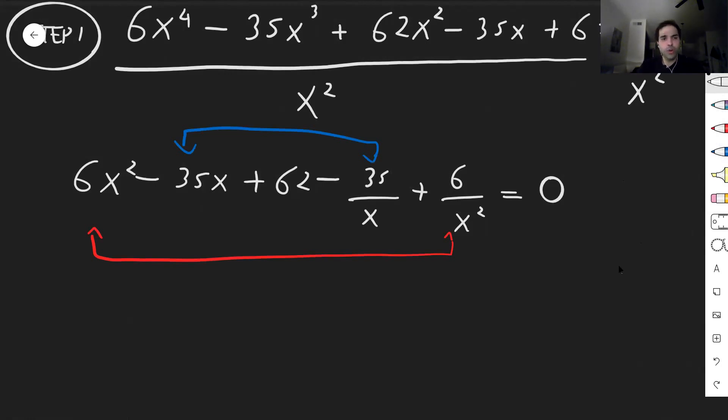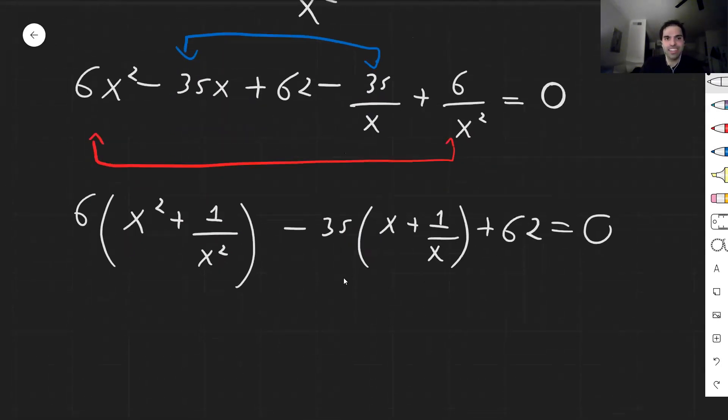And this, in turn, simplifies to 6 times the quantity x squared plus 1 over x squared, minus 35 times the quantity x plus 1 over x, and the lonely 62 equals zero. And now here's the nice thing.